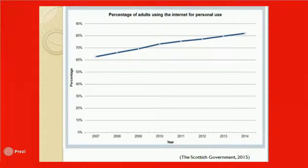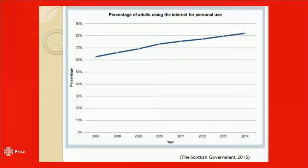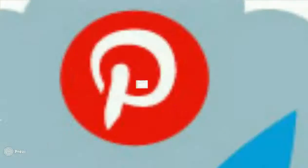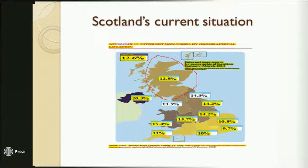Focusing on Scotland's curriculum impact, the percentage of adults using the internet for personal use increased from 60 percent in 2007 to 82 percent in 2014. A survey from January to March 2014 on Scotland's internet non-users shows that only 12.8 percent of people in Scotland are non-users, while nearly 87.2 percent are using the internet.